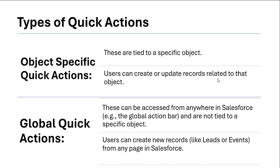There are two types of quick actions: object-specific quick actions and global quick actions. Object-specific quick actions are tied to a specific object. That means if you navigate to a particular object from the Object Manager and create quick actions on that object, you can create or update records related to that particular object. Object-specific quick actions can be added to the page layout of the object on which the action was created.